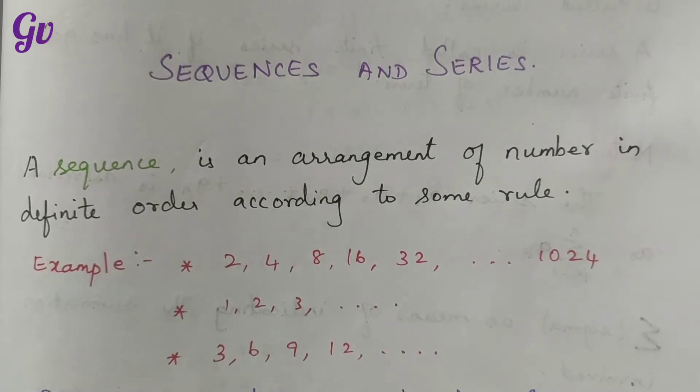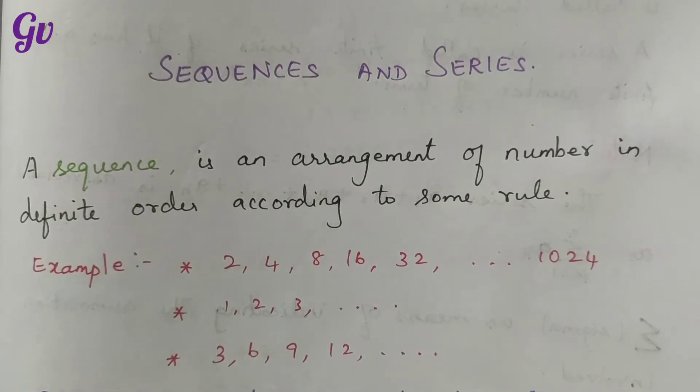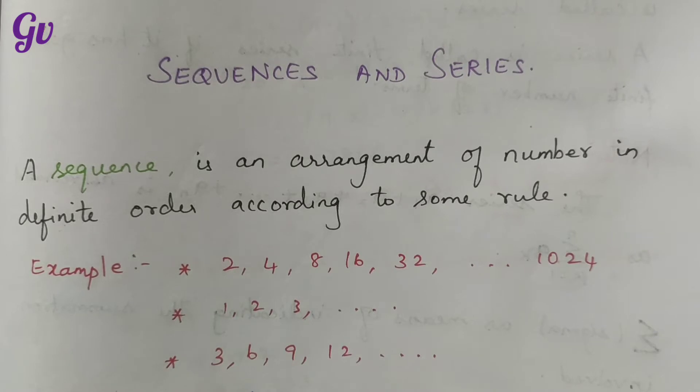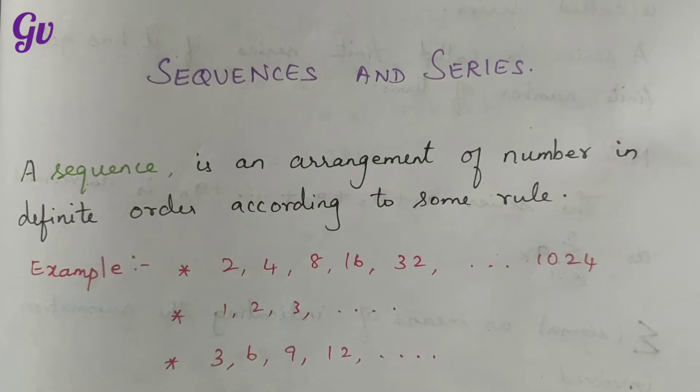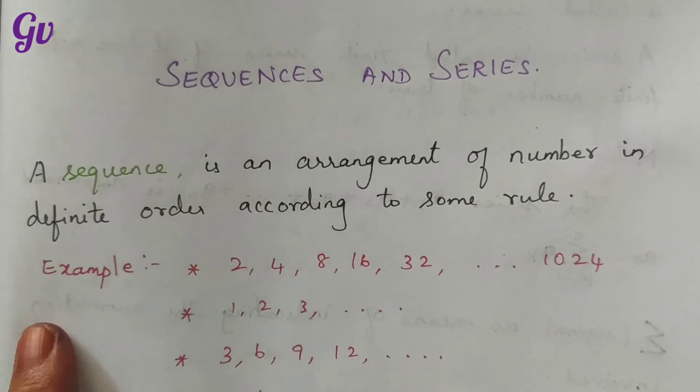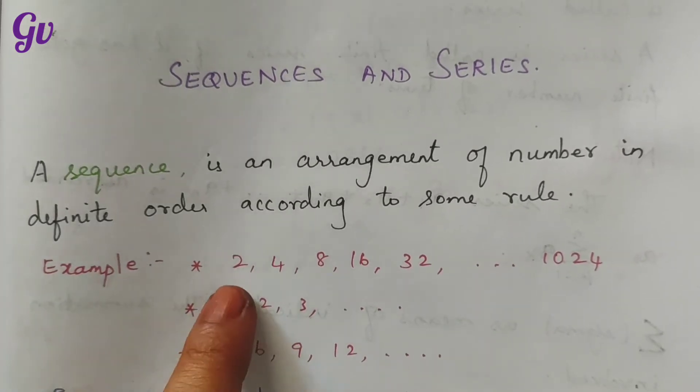So once we have a sequence, we can generalize it and write an equal to some formula — that is, we can write a general formula for the nth term. If we can write that formula, we can understand the sequence.